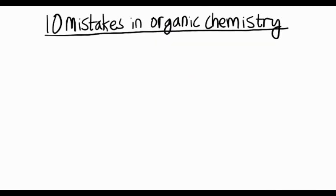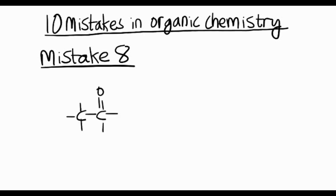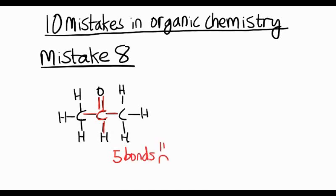Mistake 8 is to do with structures. Have a look at this molecule. This is propanone. It's a ketone. I've got carbon double bond oxygen in the middle. But there's a problem. You see that middle carbon? It's got five bonds. Carbon can only form four bonds.